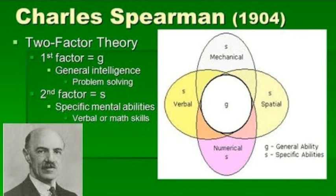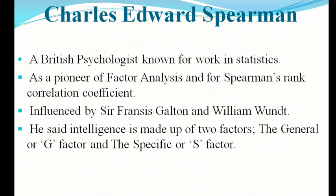Charles Edward Spearman was a British psychologist known for his work in statistics, as a pioneer of factor analysis, and for Spearman's rank correlation coefficient. Influenced by Sir Francis Galton and Wundt, he said intelligence is made up of two factors: the general or G-factor, and the specific or S-factor.